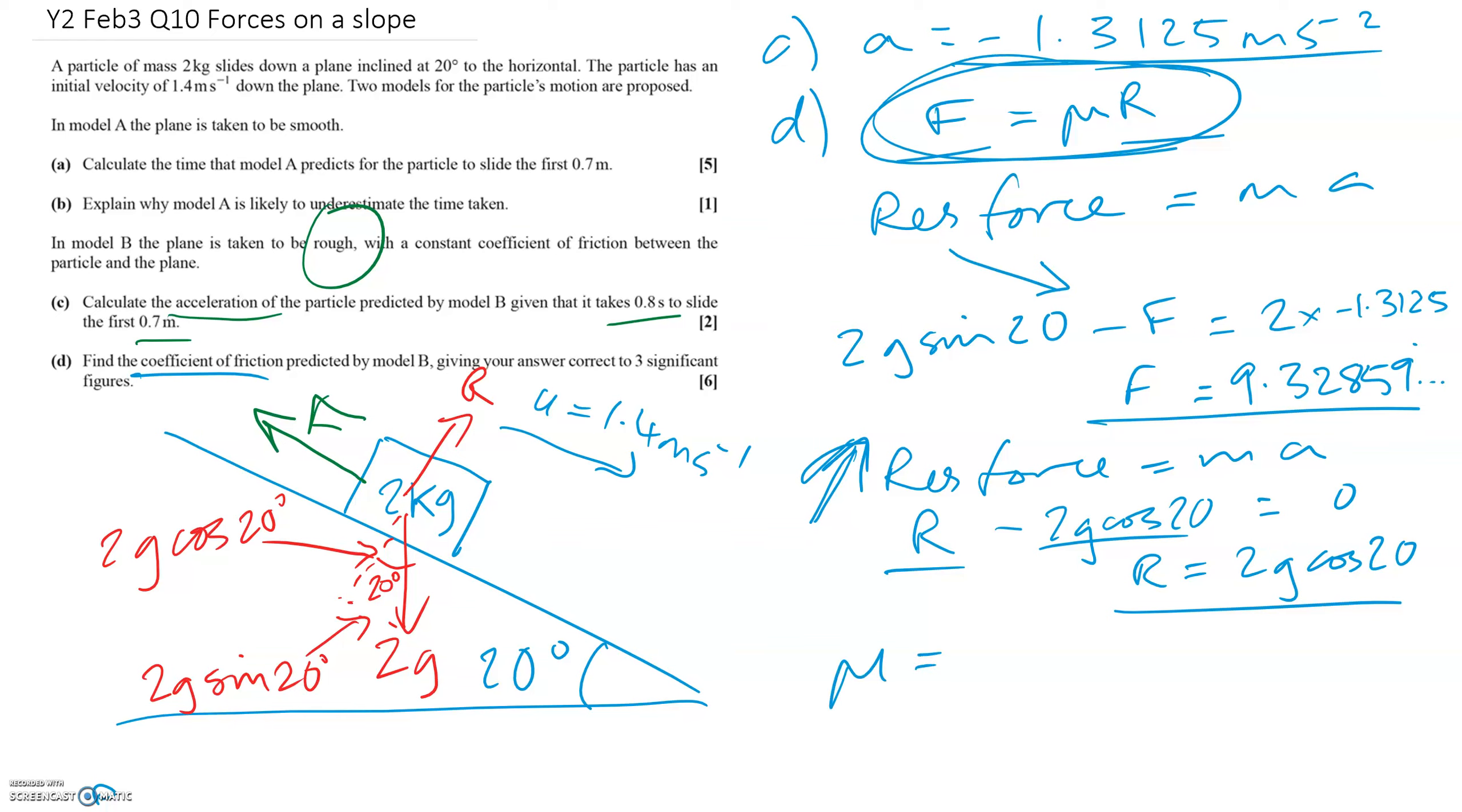We can find mu. Mu is just F divided by R, which was 9.32859 and so on, divided by 2g cos 20. And so if you type that into your calculators, you should get 0.506. That's to three significant figures. And there are no units for mu. That's all.